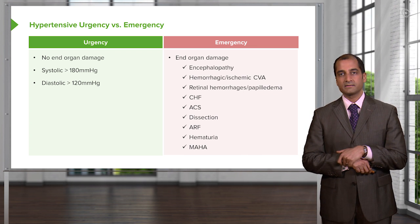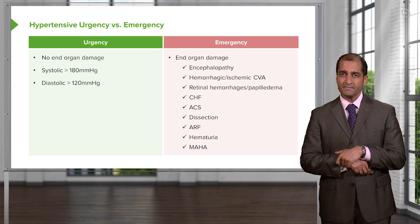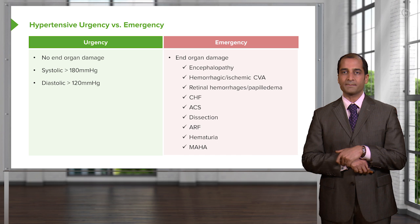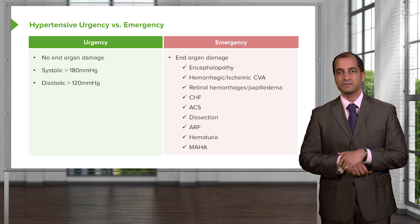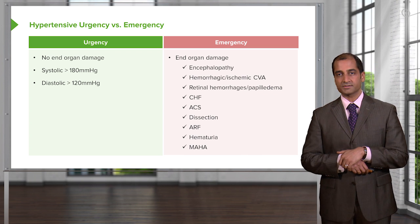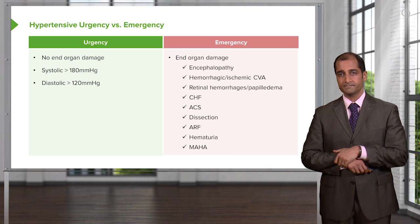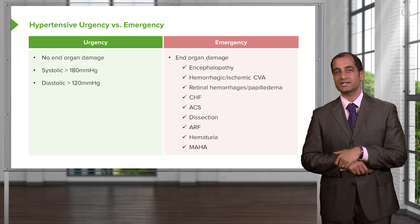What about the kidney? Is that going to undergo damage? Of course it will. What's that called? Acute renal failure — ARF. If there's enough kidney damage, what may then happen? You might release RBCs — this is called hematuria clinically. Finally, there's enough damage taking place in the blood vessels that as the RBC traverses through, it might get damaged. What's that called? Microangiopathic hemolytic anemia — MAHA.